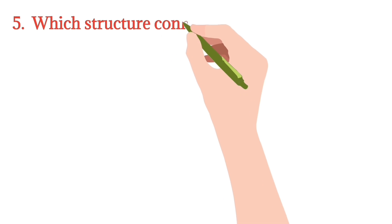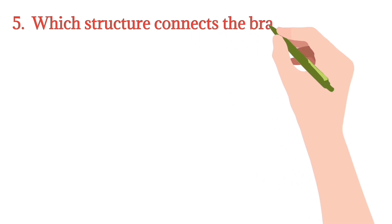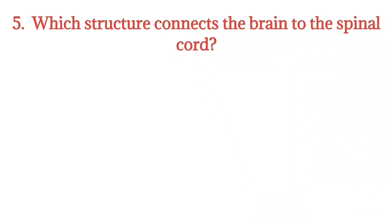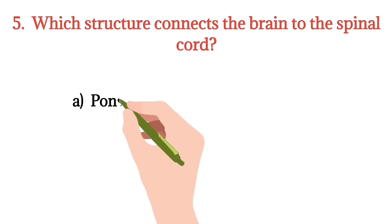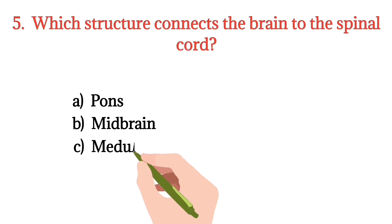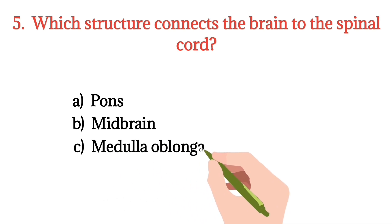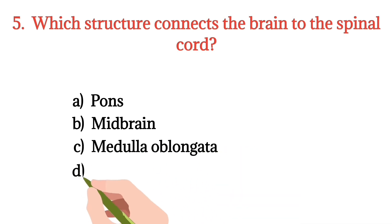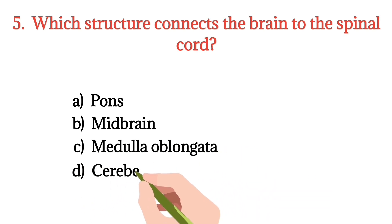MCQ number 5. Which structure connects the brain to the spinal cord? Option A: Pons. Option B: Midbrain. Option C: Medulla oblongata. Option D: Cerebellum. The right option is Option C.